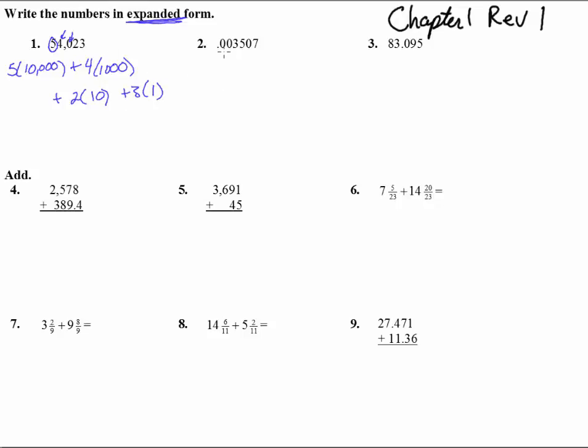Number two, here we have no tenths, no hundredths, but we do have three thousandths. Let's make sure and put the th on there. Plus five ten thousandths. No hundred thousandths, but seven, so plus seven millionths. I just didn't want to write all those zeros out.